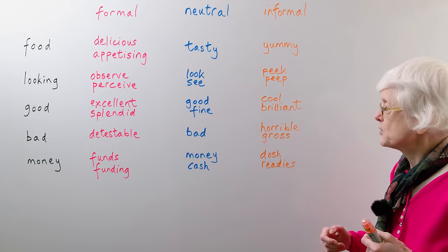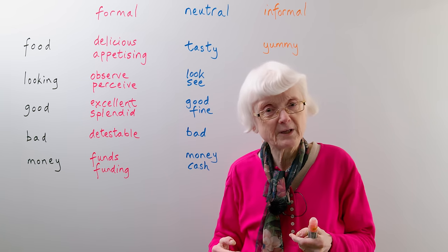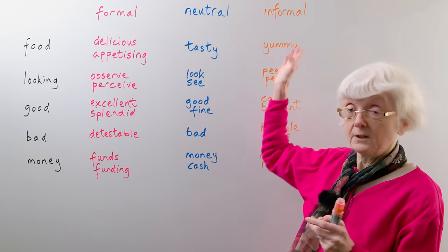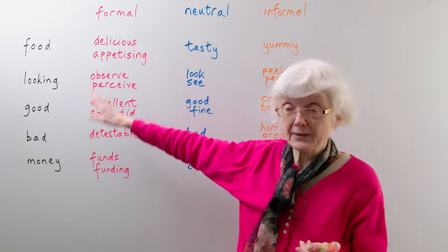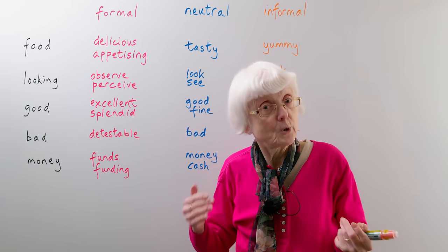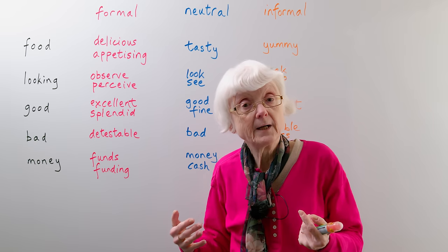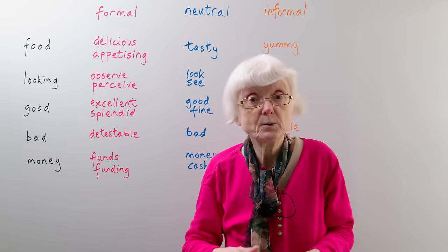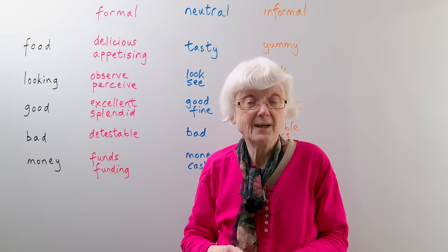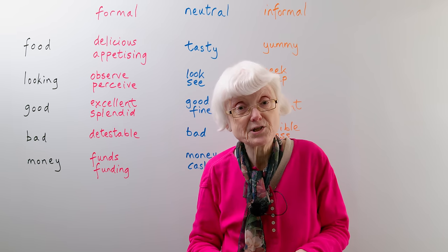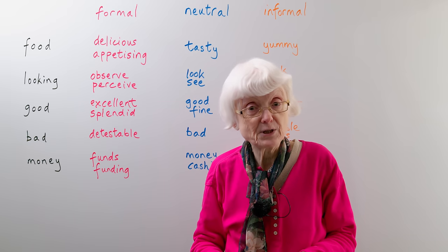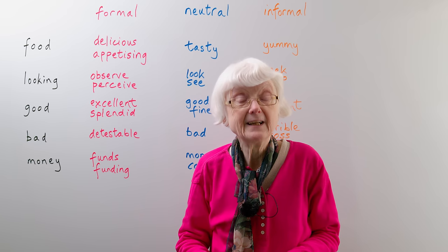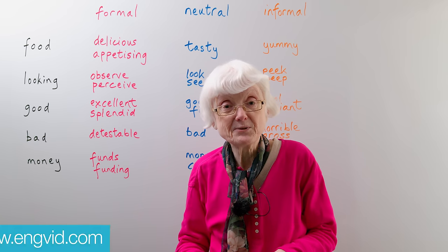I hope that's a good set of examples of how you can have words in different registers, from formal to neutral to informal. You might like to think of other categories and see if you can find words that all mean the same but belong in different registers. We have a quiz on this topic — if you'd like to test your knowledge, just go to the website www.engvid.com and give the quiz a try. Thank you for watching, and hope to see you again soon. Bye for now.